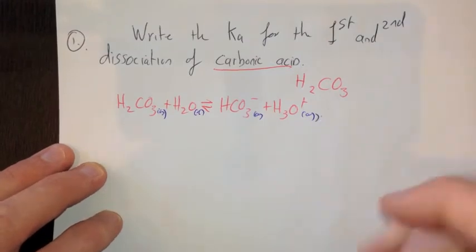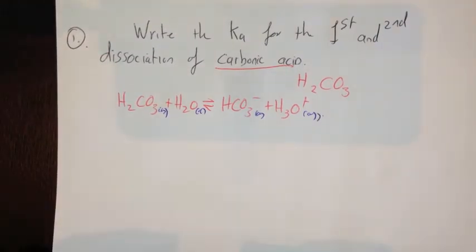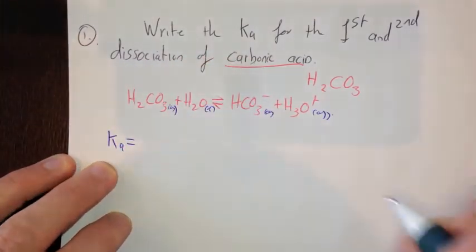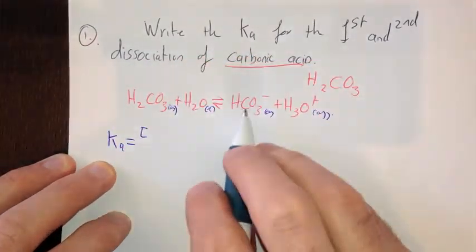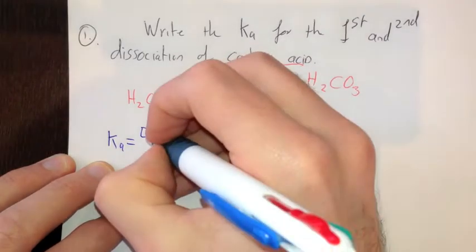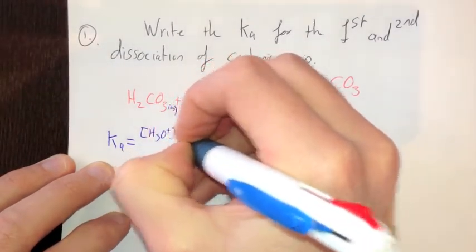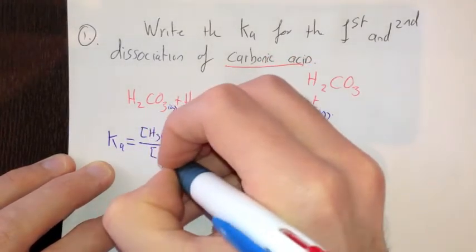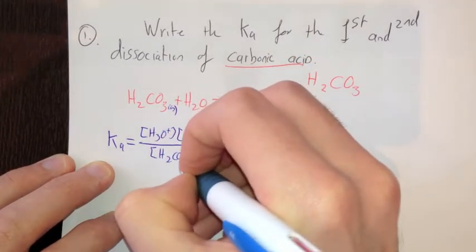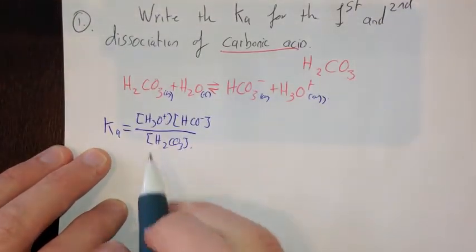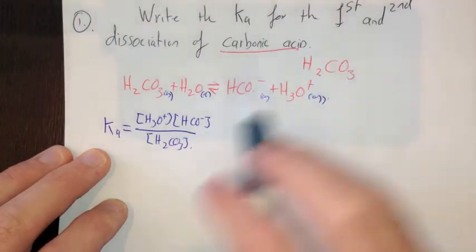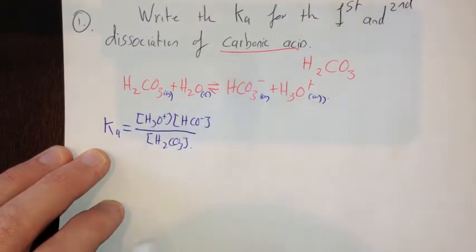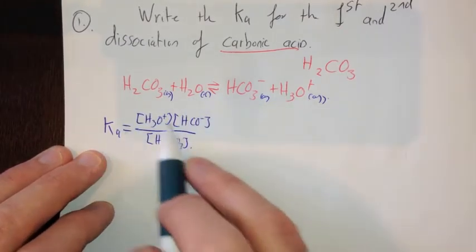Okay, we want to write a Ka value for this. Therefore we know Ka is equal to the concentration of these two ions multiplied together, divided by concentration of our acid to begin with. And that's all it is for the first ionization. So the first one of these hydrogens breaks off and jumps onto water, this is our first ionization. This is the Ka value for it.